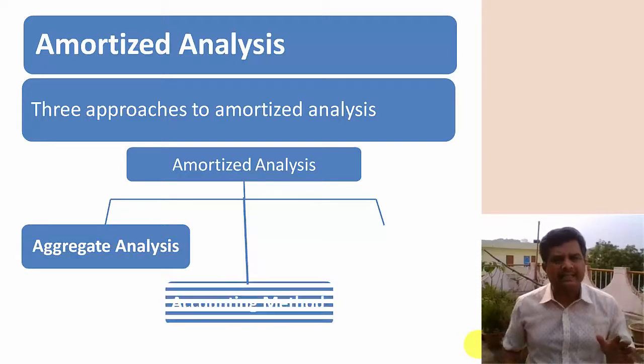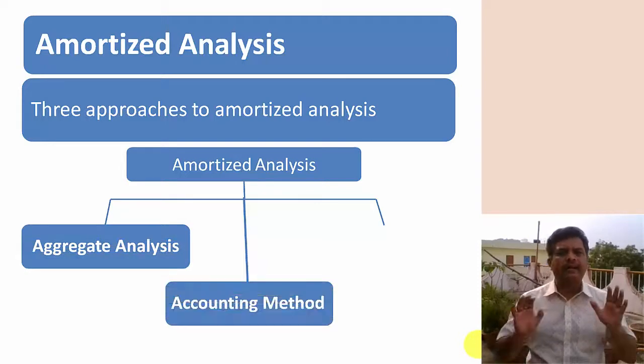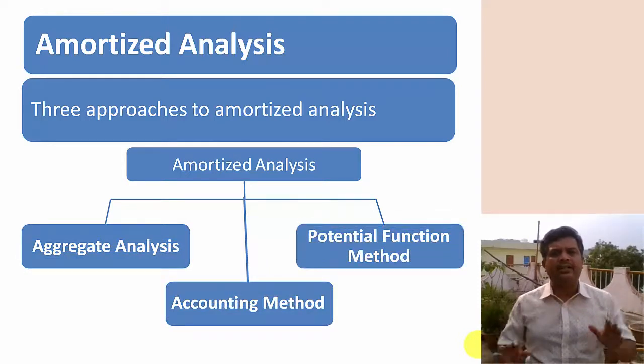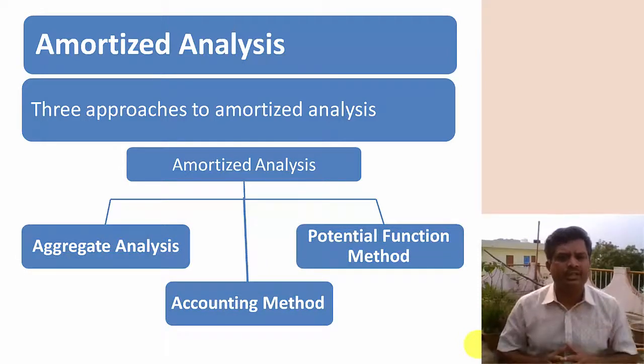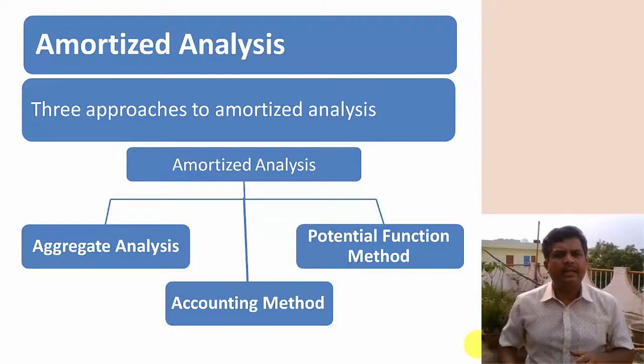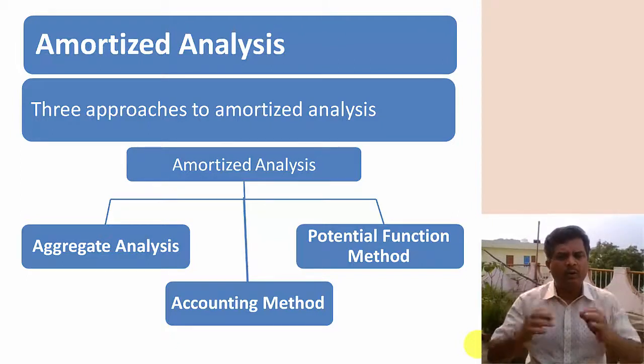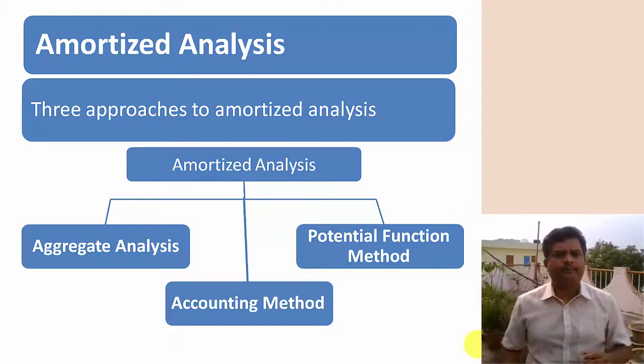There are three different approaches available for amortized analysis. The first one is aggregate analysis, the second one is the accounting method, and the third one is the potential method. We will discuss each and every method one by one.